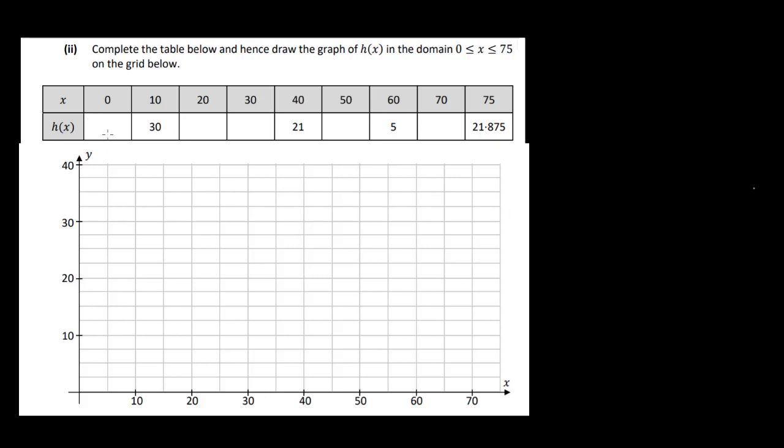So for 0 we found we got 5. For 10 we got 30. That's fine, that's already done. For 20 we got 37. For 30 we got 32. 40 was 21. 50 was 10. 70 was 12, and 75 is 21.875. Okay, so now we've got to plot these points. So let's do that.